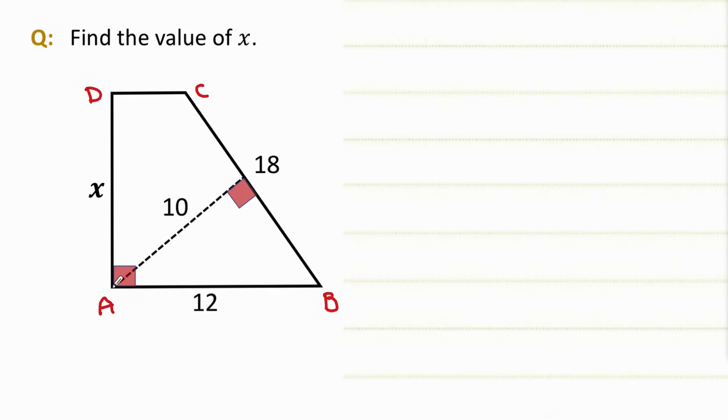We are looking for the length of AD, which is x. We draw a line to connect A to C, like this. Now we have a triangle A, B, and C.